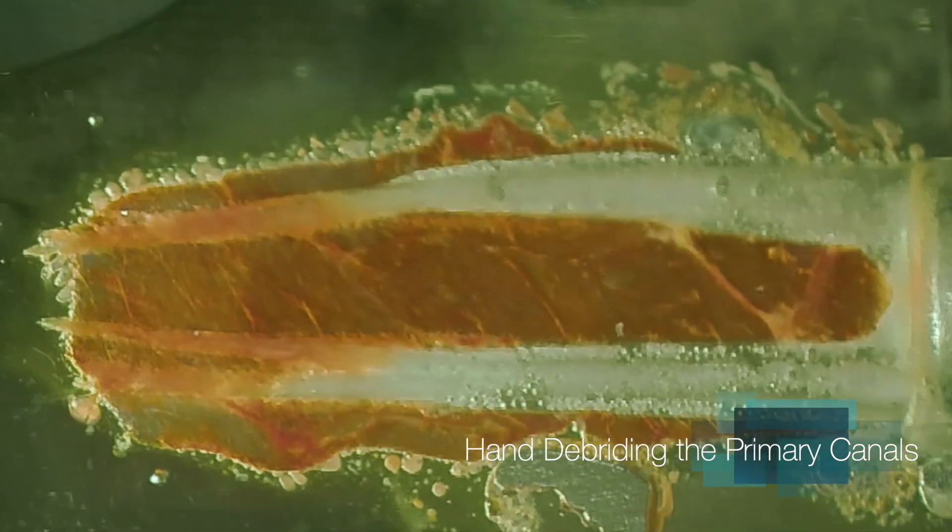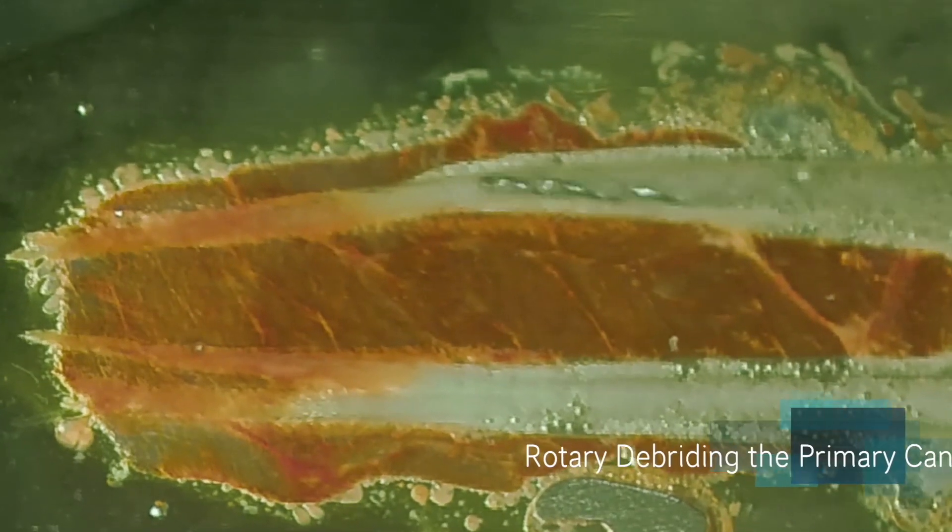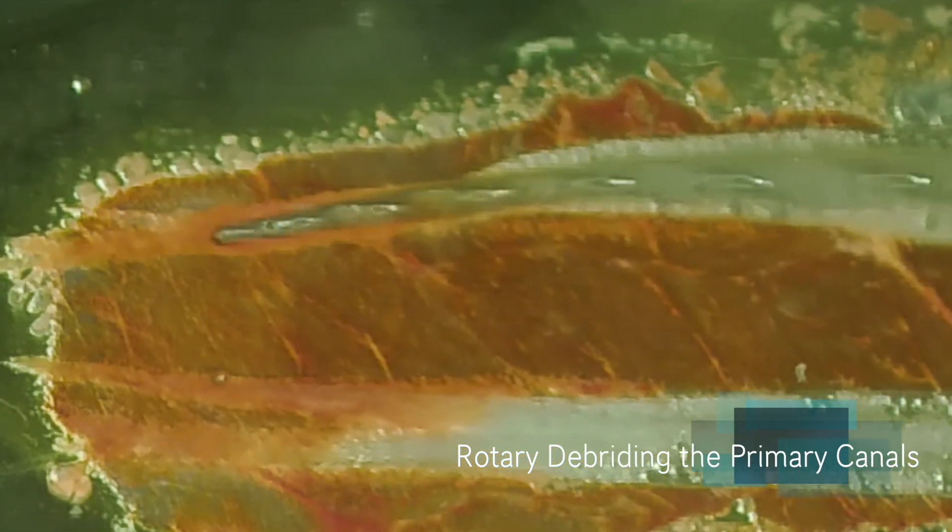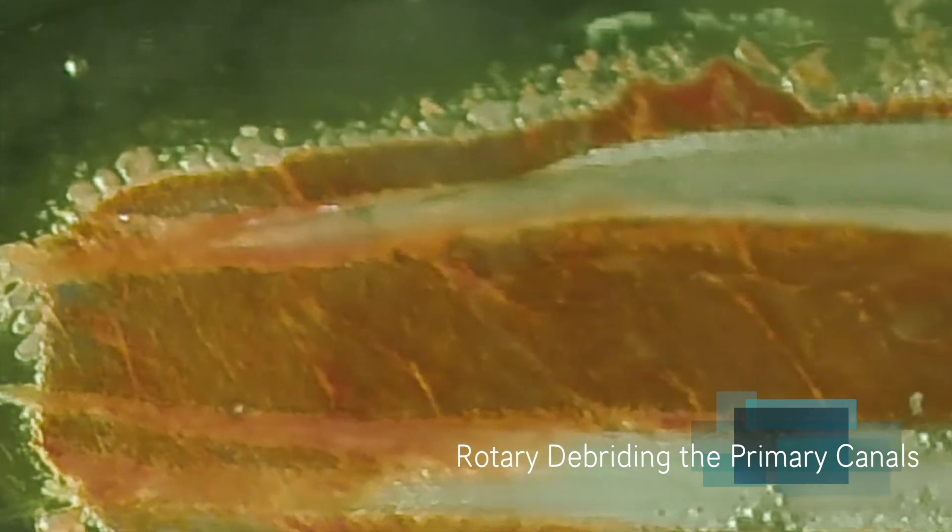Watch what happens when we spin this thing at 300 RPM. It is actively auguring material out of the canal, pulp tissue out of the canal.